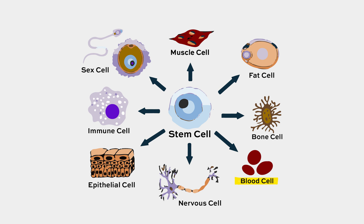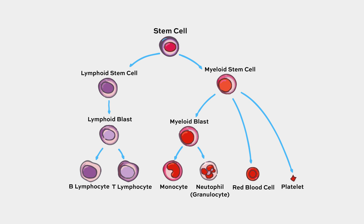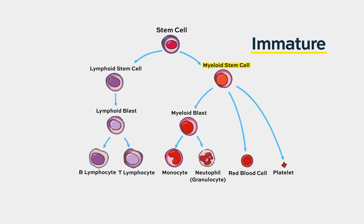There are leukemias that are very early in the stem cell hierarchy, and then there are leukemias that are generated in a more mature cell, like in a blast or promyelocyte cell. In the old days, the leukemias were classified based on what cell was transformed — very immature stem cell-like leukemias, and then more mature leukemias that affect monocytes or promyelocytes.